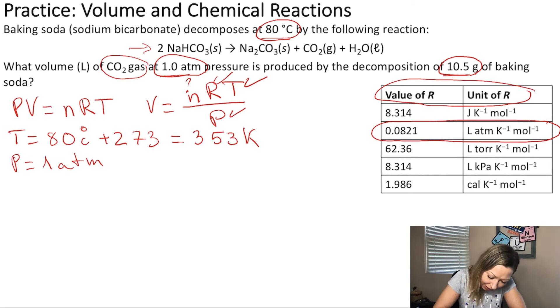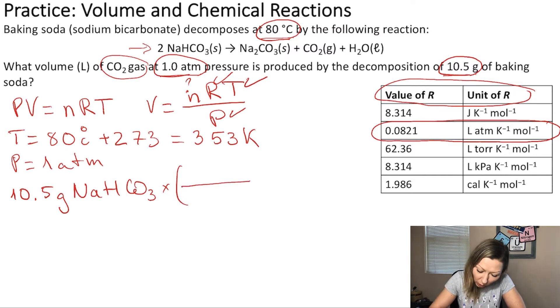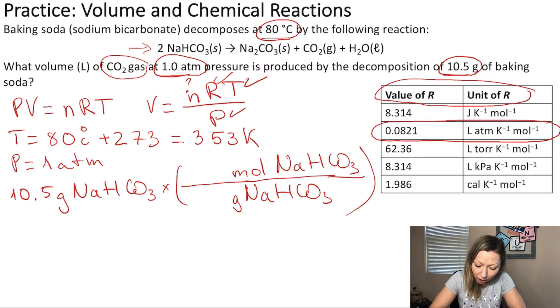So, let's start with the grams of baking soda, which is sodium bicarbonate, NaHCO3, which is a solid. And in order to convert it into moles, we need to have the grams of NaHCO3 on the bottom and the moles of NaHCO3, or baking soda, on top. We know that one mole is actually going to be 84.01 grams, which is simply the molar mass of baking soda.